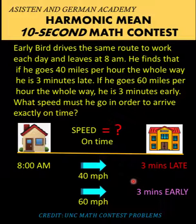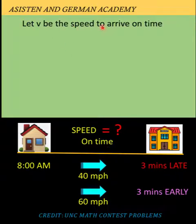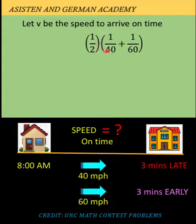What we are going to do here is get the reciprocal of each speed — the reciprocal of 40 is 1 over 40, and the reciprocal of 60 is 1 over 60 — and get their average. In that case we are dealing with what we call the harmonic mean. So let's perform the computation. We let v be the speed to arrive on time, and we get the sum of 1 over 40 plus 1 over 60, divided by 2 or multiplied by 1 half, in order to get the average. That average is what we call the harmonic mean.